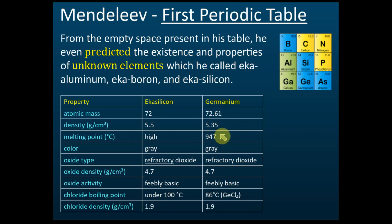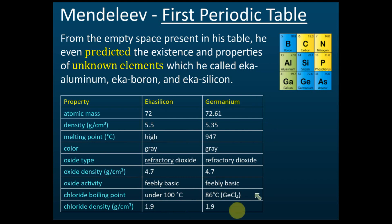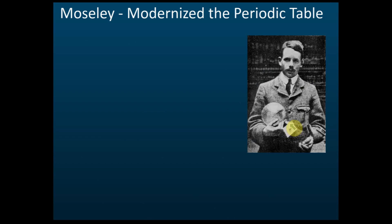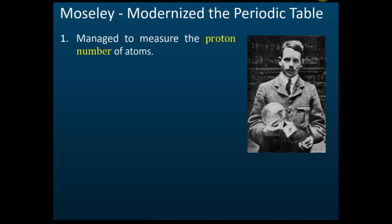When scientists later discovered germanium, the actual properties were: atomic mass 72.61, density 5.35, and also a high melting point. We can see how accurate Mendeleev's predictions were, even though he knew nothing about germanium — he used his periodic table to predict its properties accurately. This demonstrates how useful and accurate his periodic table was.